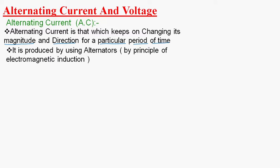How can we produce alternating current? We can produce alternating current by using alternators — by making the conductor or coil to rotate in a stationary magnetic field. By using the principle of electromagnetic induction, we can produce alternating nature of voltage.